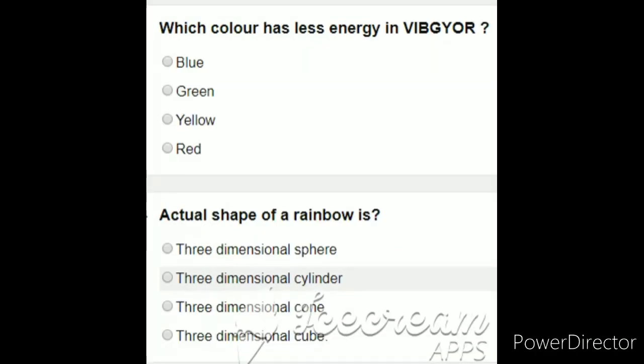Which color has less energy in VIBGYOR? In VIBGYOR, highest energy is violet, lowest energy is red. So red has less energy. In our options, red is given. VIBGYOR: violet, indigo, blue, green, yellow, orange, red.